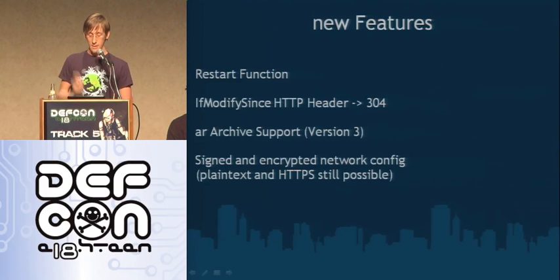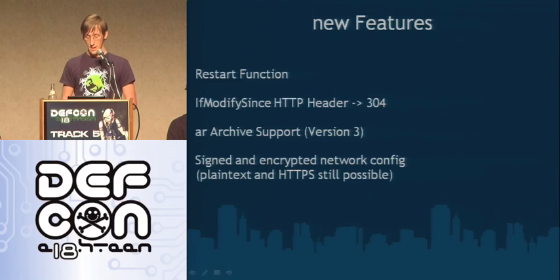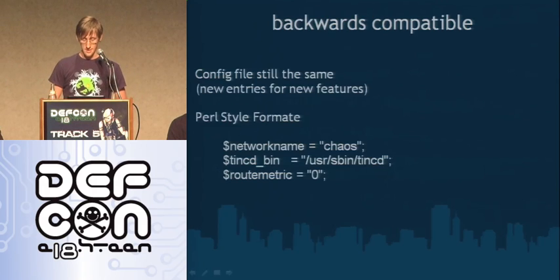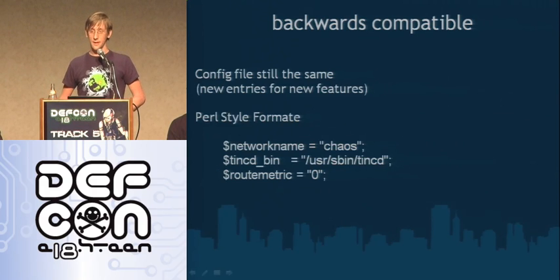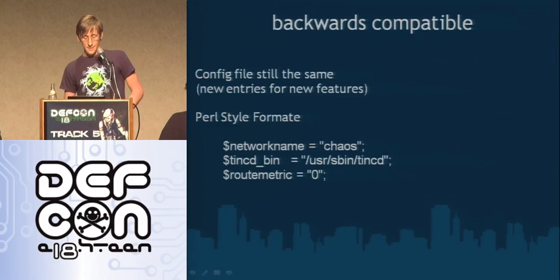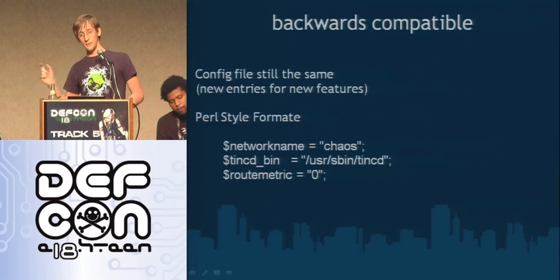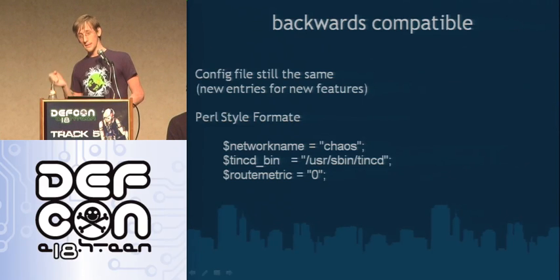All that stuff is in around 4,700 lines of code, so it's not that much. We tried to get rid of most dependencies because you can build it on more systems with fewer dependencies. We are still backward compatible, which is the reason we have this strange config file at the moment — it's written in Perl style, sorry for that. But you can still use an old config file with the new software. We added new features with new config entries, but we set proper default values so if you don't define those values, there's a default value for that.